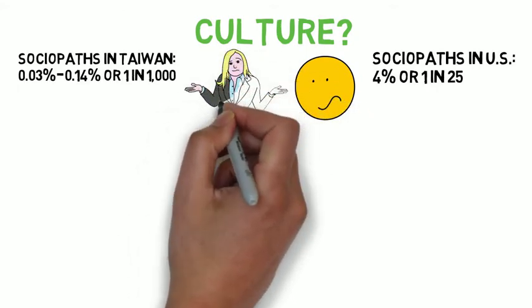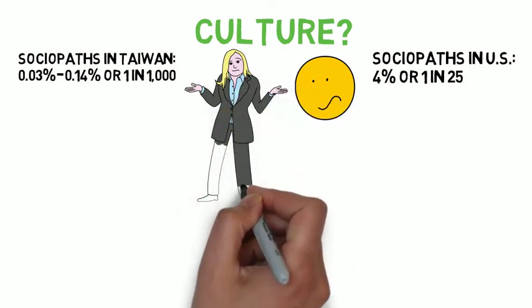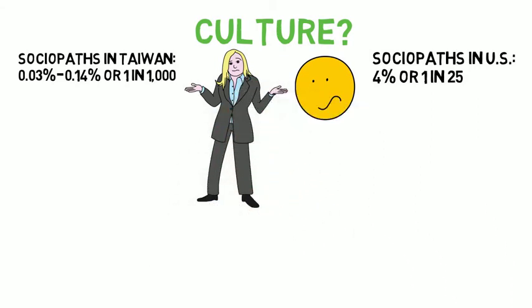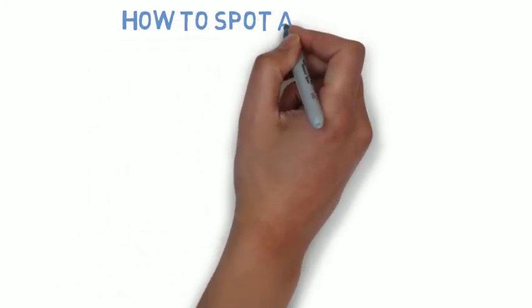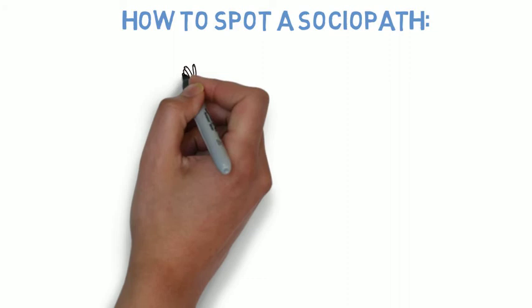Again, the fact of the matter is, we don't truly know what causes sociopathy. But we do know that sociopaths exist and they can cause us a tremendous amount of psychological harm. So that begs the question, how can you tell if someone is a sociopath?